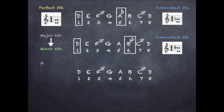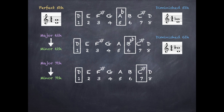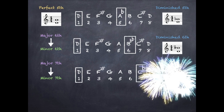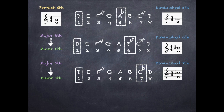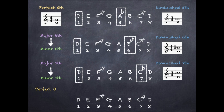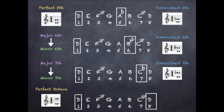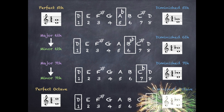To create a diminished seventh interval, first create a major seventh interval — D to the seventh note of the major scale, which is C sharp. Convert this to a minor seventh by flattening the top note — C sharp becomes C. Now convert this to the diminished seventh by flattening the top note of the minor seventh, so C becomes C flat. Finally, to create a diminished octave, first create a perfect octave. We go from the first note of the D major scale to the eighth note. To create the diminished octave, flatten the top note — D becomes D flat.